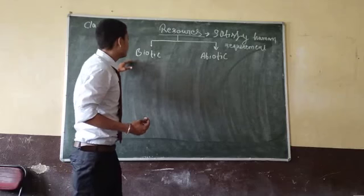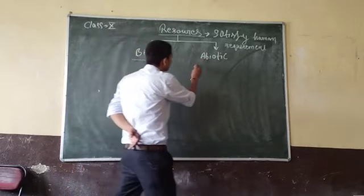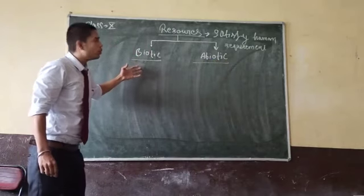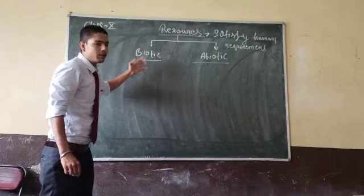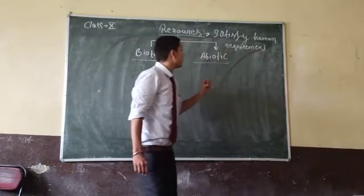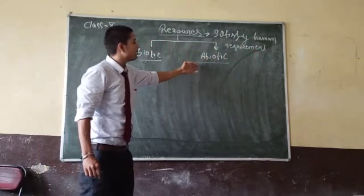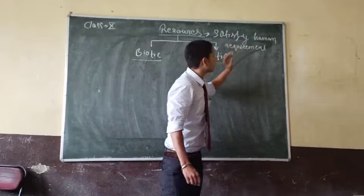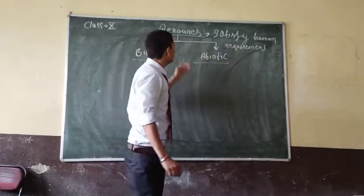So now these two terms are clear: what are biotic resources and what are abiotic resources. Biotic resources are those which come from living organisms and satisfy human requirements or needs. Next,